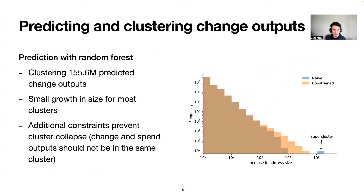The next step was to use those classifiers to predict change outputs for transactions where we don't know them yet, and then cluster those change outputs for enhanced clustering. Applying the classifiers to the bitcoin blockchain and selecting a conservative probability threshold to prevent cluster collapse, we were able to cluster 155 million predicted change outputs. In most cases we see a small growth in cluster size. However, for some large clusters, applying change address detection naively led to cluster collapse. So we defined additional constraints on conflicting predictions that prevented this cluster collapse for clusters of intermediaries.